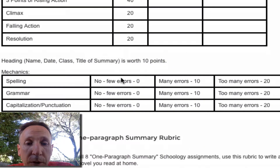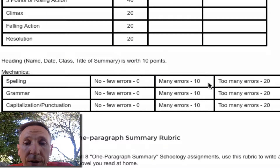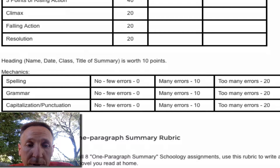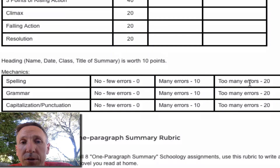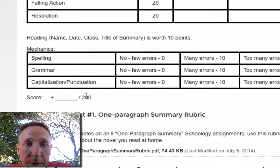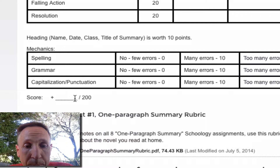And then you can lose points for mechanics. If you don't have a lot of errors or no errors at all, you won't lose points. If you've got many errors, you'll lose 10 points depending on whether it's in the spelling, grammar, capitalization, or punctuation category. If you've got too many errors that it's difficult for me to read at times, you'll be losing some significant points on a 200-point assignment. This one is worth 200 points.